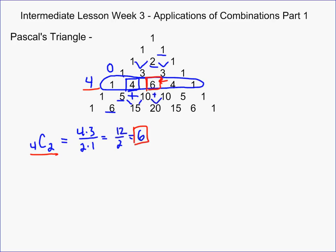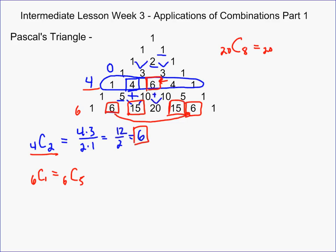There is symmetry in Pascal's Triangle, and that symmetry leads us to a very important thing about combinations. For instance, 6 choose 1 is the same as 6 choose 5, because the 6 right here is the fifth entry. That's always the case with combinations: 6 choose 2, which would be 15, is the same as 6 choose 4. If the two numbers add up to the number you're choosing from, then they're the same. That tells us that 20 choose 8 is the same as 20 choose 12, because in the 20th row of Pascal's Triangle, the 8th entry is the same as the 12th entry due to the symmetry.